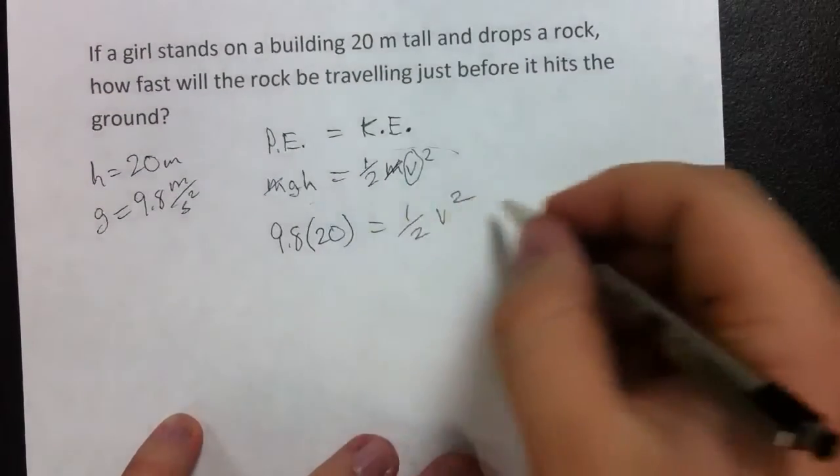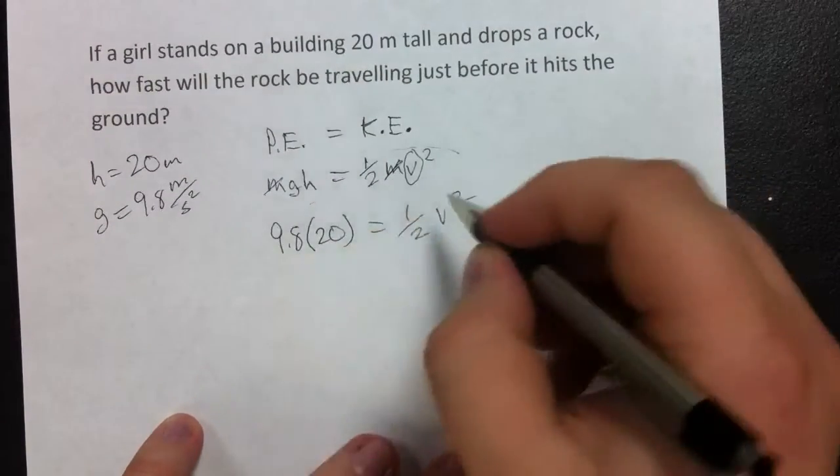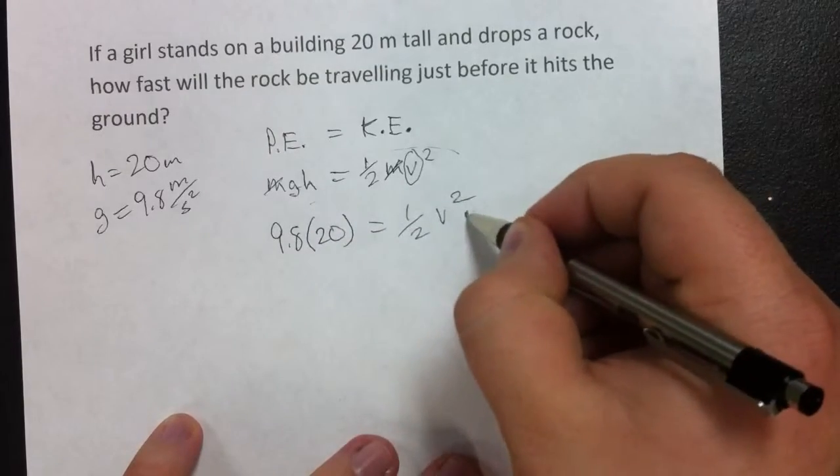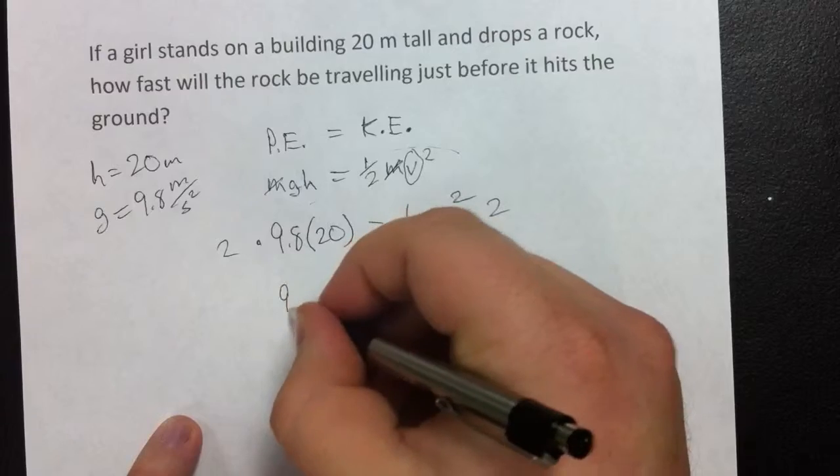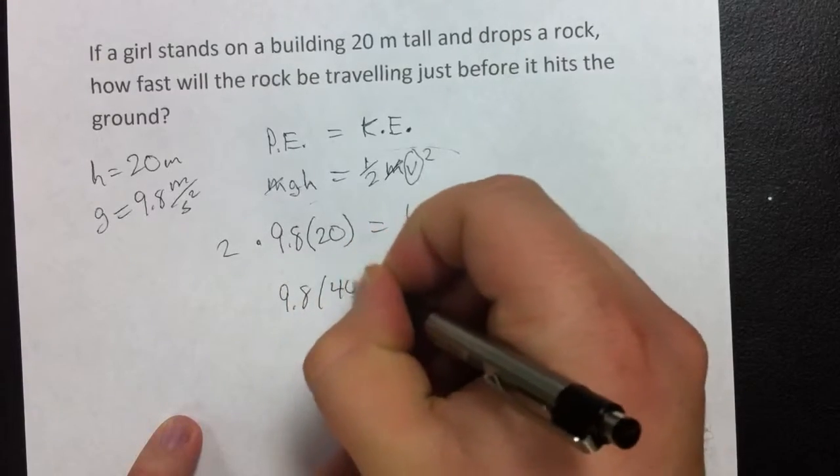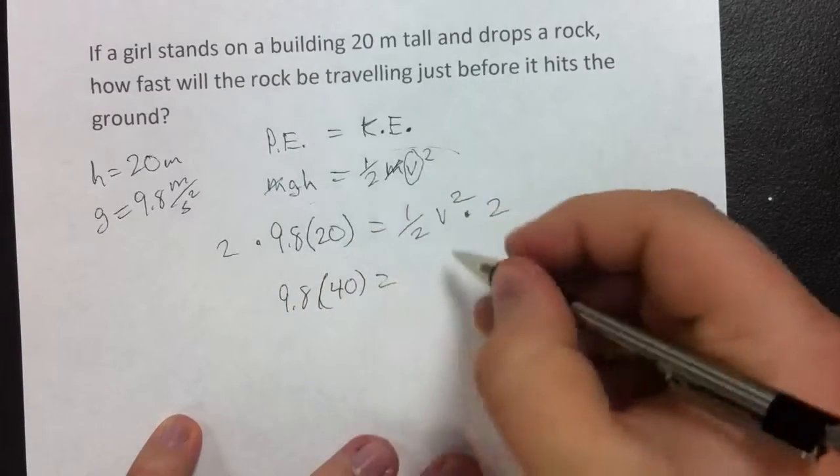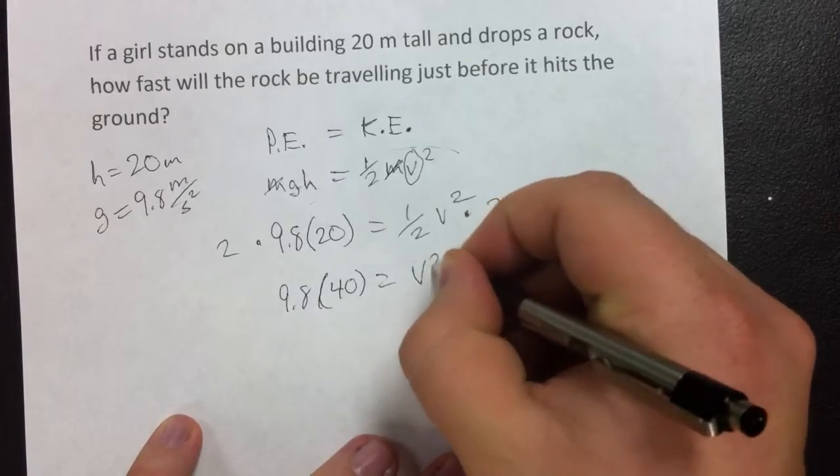Now, all we have to do is solve for velocity, which is fairly simple, basic algebra in this case. So, we're going to multiply both sides by 2 to get rid of the one-half here. We'll do that with 9.8 times 40, is equal to v squared.